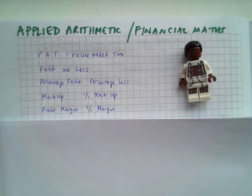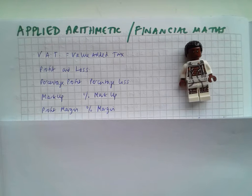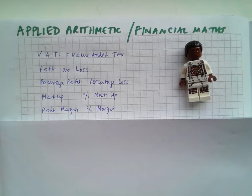I would expect that you would find VAT, profit and loss to be terms that you'll understand — things that you come across probably either in business class or out when you're shopping. You could discuss those at home with your families if you want to know a little bit more about them. Percentage profit again I would expect you to understand, the concept of it anyway. Markup and margin are slightly different and can cause a little bit more trouble, so we'll spend a little bit of time on those as well.